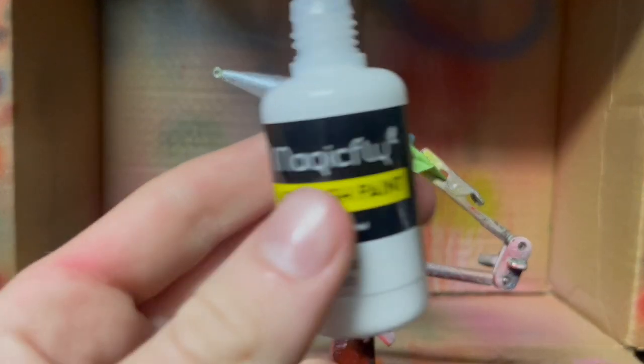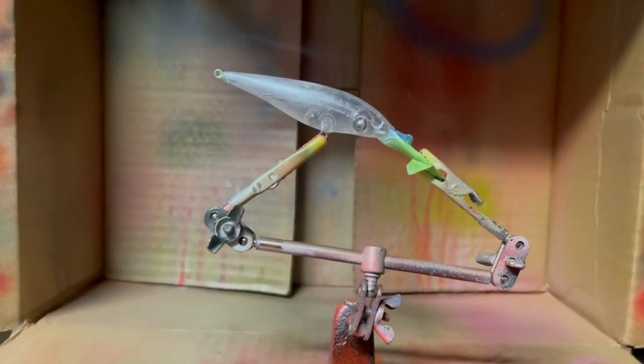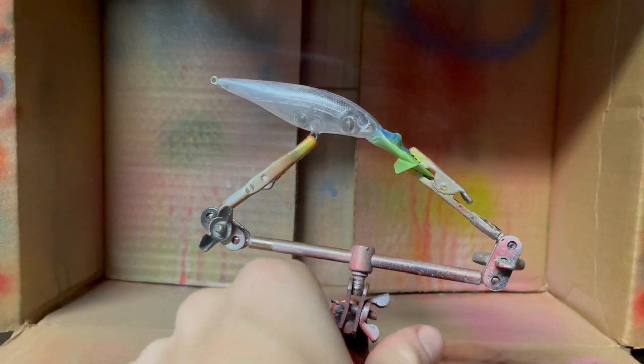All right guys, the first color we're going to be doing is this opaque white. I like to do this just to make my color stand out. So let's get this first little coat in of opaque white.